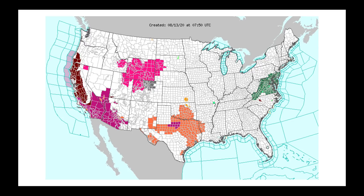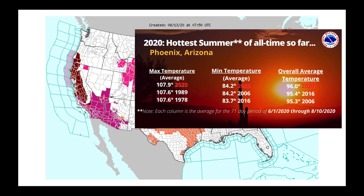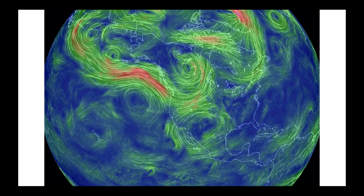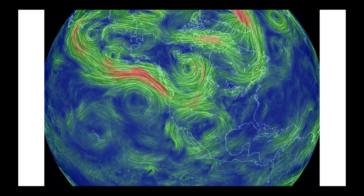Before I go any farther, I would like to show you that Phoenix, over the last 71 days — from June through early August — is currently having its hottest summer on record, averaging a maximum temperature of 107.9 degrees Fahrenheit. And that heat isn't going anywhere anytime soon.